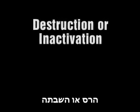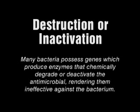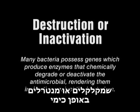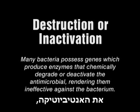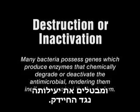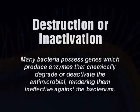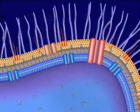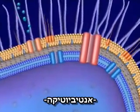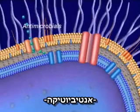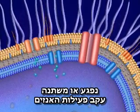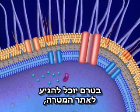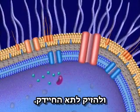Destruction or Inactivation. Many bacteria possess genes which produce enzymes that chemically degrade or deactivate the antimicrobial, rendering them ineffective against the bacterium. The antimicrobial is either degraded or modified by enzymatic activity before it can reach the target site and damage the bacterial cell.